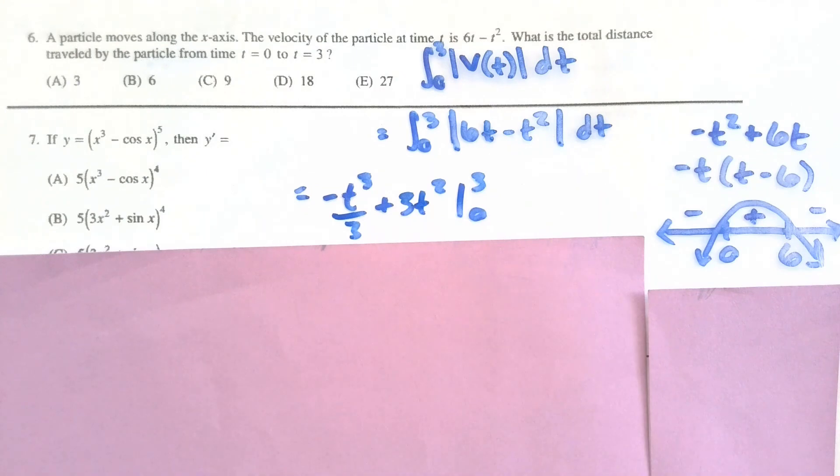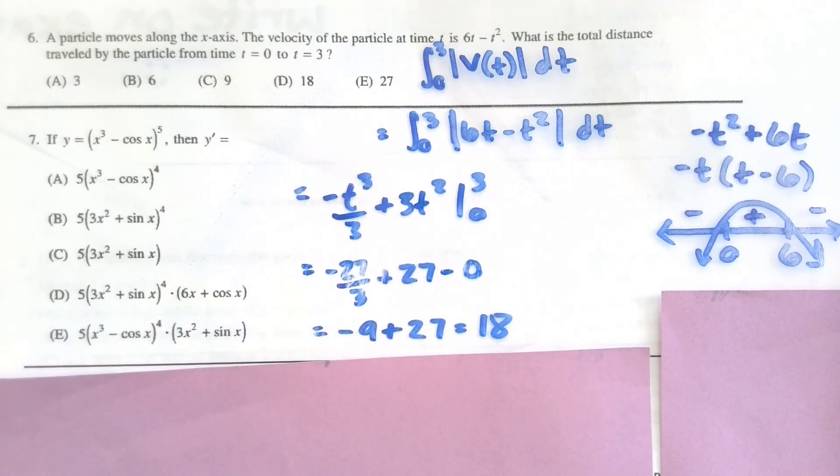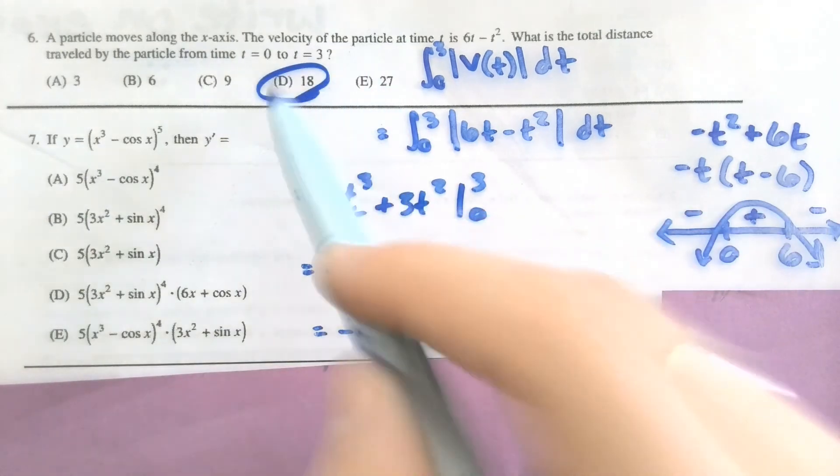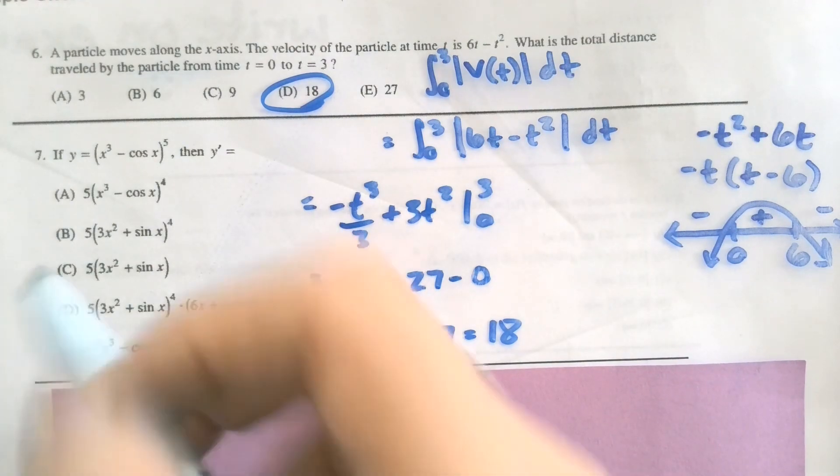Using the fundamental theorem of calculus, finding that integral, and then plugging in my three minus my plugging in zero. And then we should get that the total distance is 18. For that last question, I ended up revealing the question below it. So if you're curious, the answer to number seven is D.